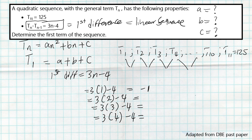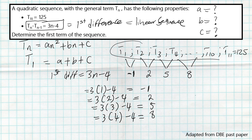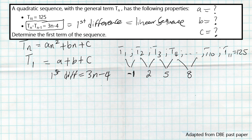So 3×2 = 6 minus 4 gives 2; 3×3 = 9 minus 4 gives 5; 3×4 = 12 minus 4 gives 8. We use that formula to get the first differences. So T2 minus T1 = −1, the next is 2, then 5, then 8. We now have the actual values of the first differences, even though we don't have the sequence terms themselves.